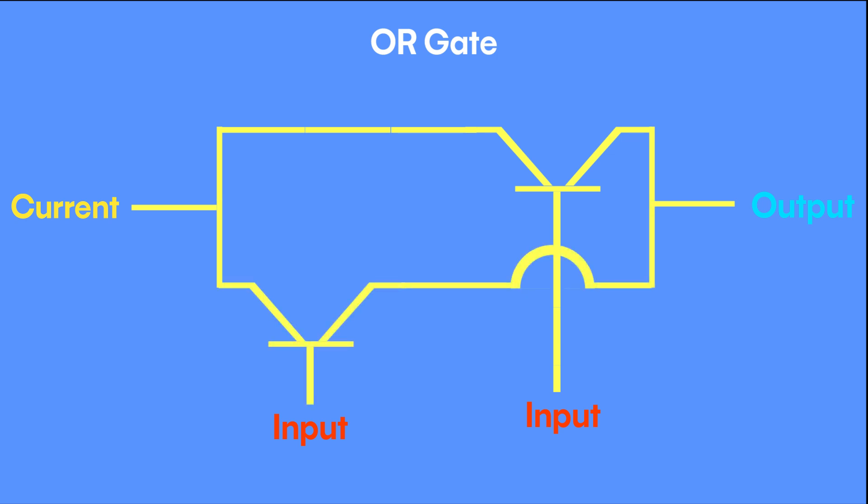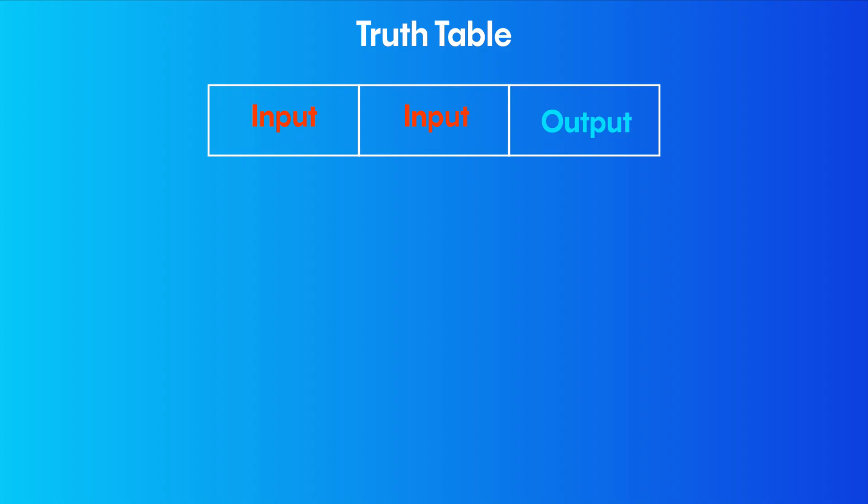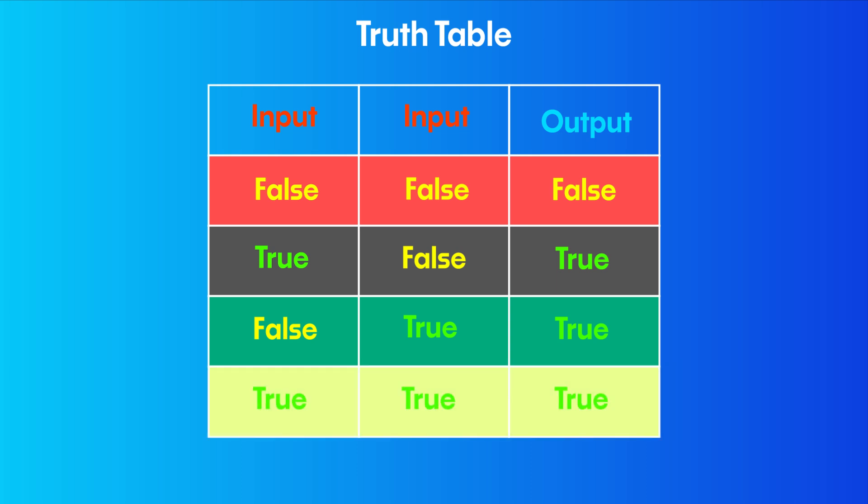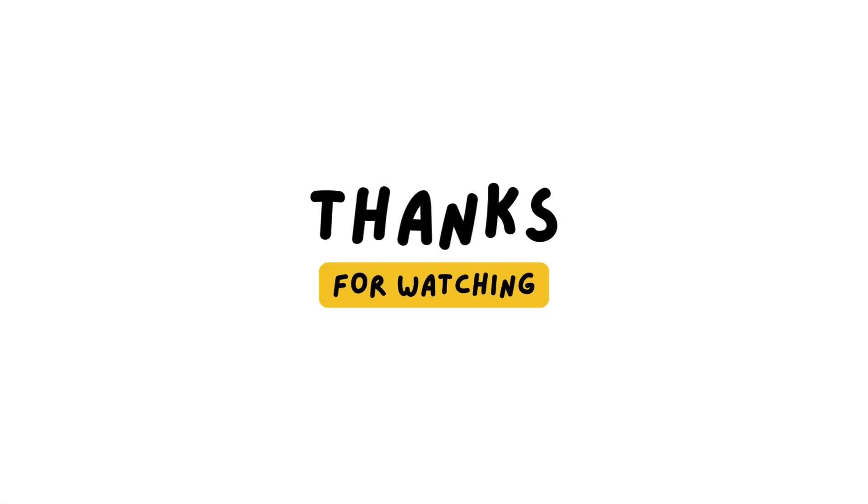An OR gate is rather strange. It can take in three combinations of inputs to produce a true output. For instance, this channel is robotic and its main color is black. Now, the first statement is correct or true. However, the last statement isn't and therefore false. Even though one statement is false, an OR gate still produces a true output. Same is the case for when both inputs are true.